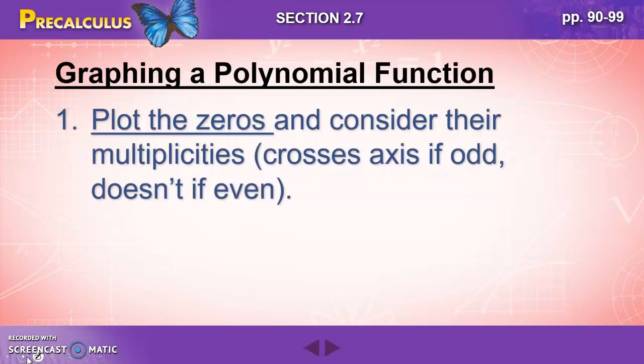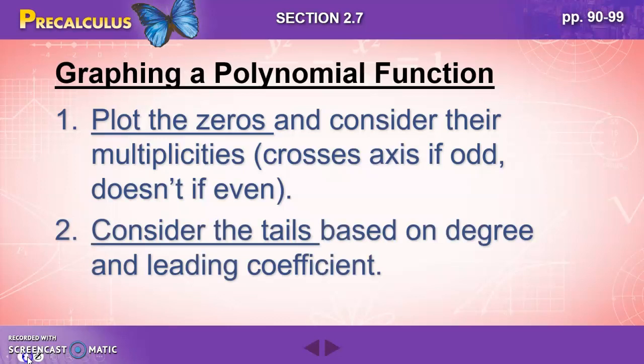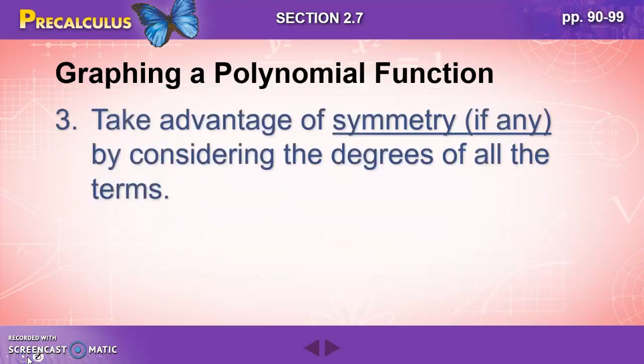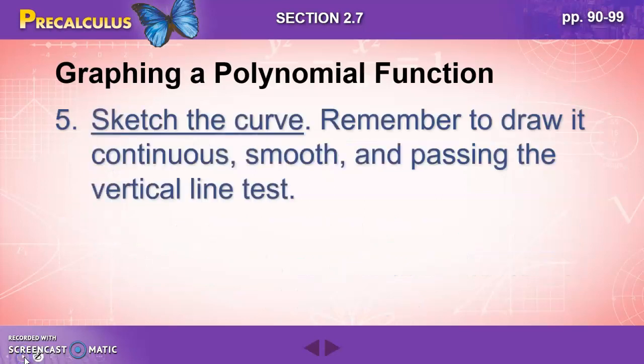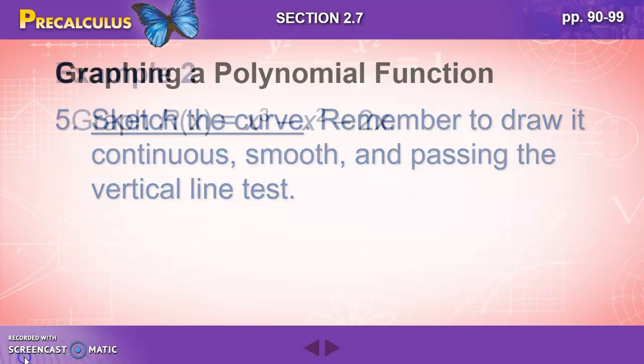When graphing a polynomial function, you want to follow these steps. Plot the zeros and consider their multiplicities. Again, that's how many times it crosses the axis. Consider the tails based on the degree and leading coefficient. Take advantage of symmetry, if any, by considering the degrees of all the terms. Plot the y-intercept, which is plugging in a zero for x, and other strategic points as guides. Sketch the curve. Remember to draw it continuous, smooth, and passing the vertical line test.